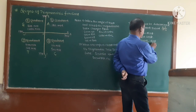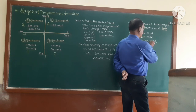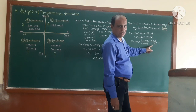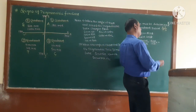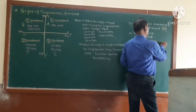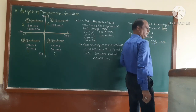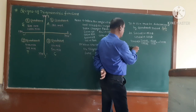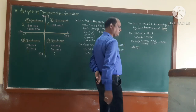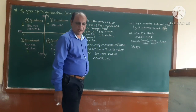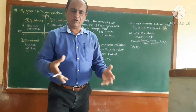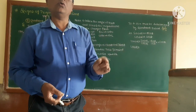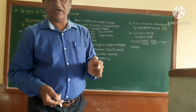For cot(−θ): cot is cos divided by sin. So cot(−θ) = cos(−θ) / sin(−θ) = cosθ / (−sinθ) = −cotθ. The minus sign carries through, giving cot(−θ) = −cotθ.